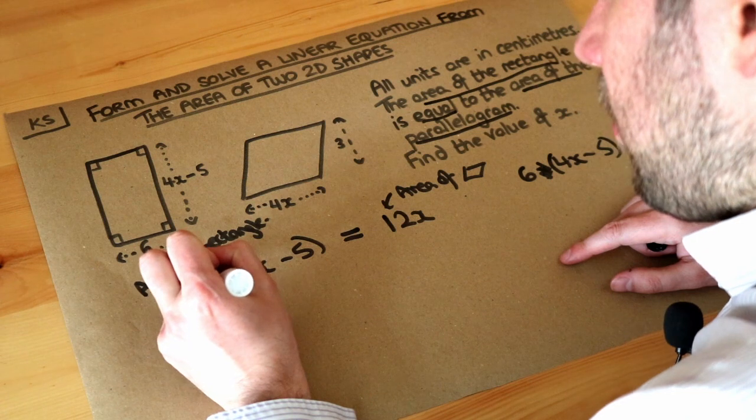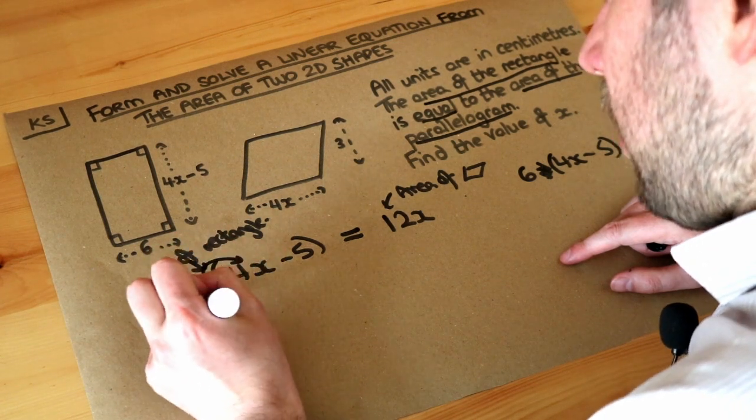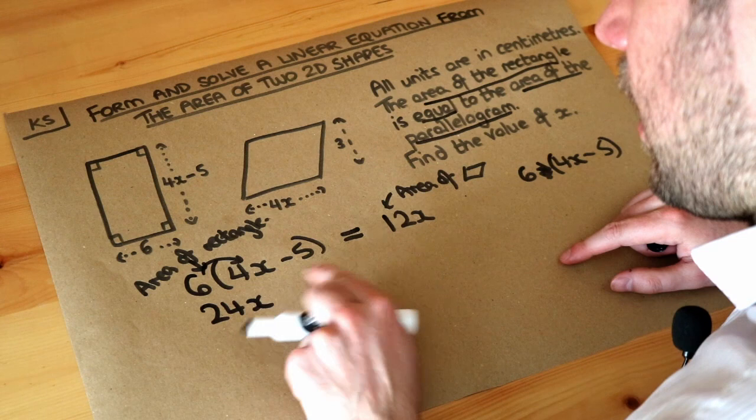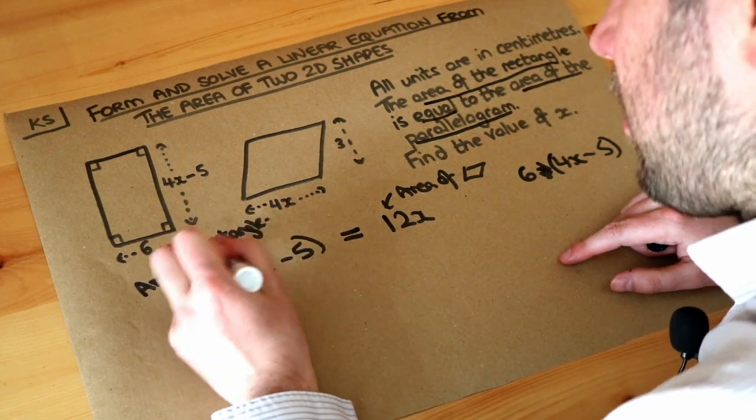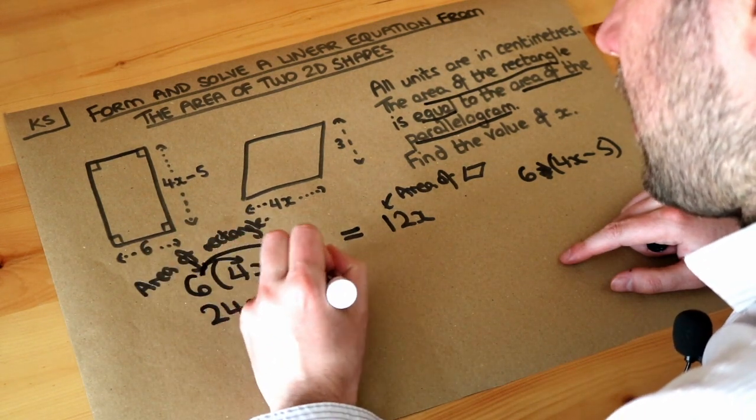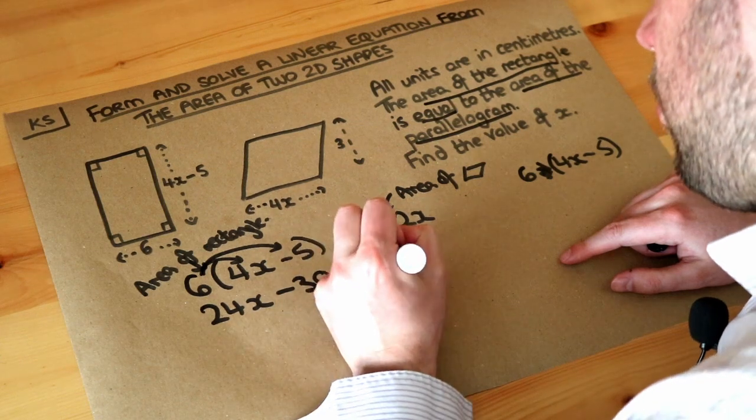So we can do 6 times the 4x, which is 24x because 6 times 4 is 24 and you've also got that x. And we've got 6 times minus 5, which is minus 30. And that is equal to 12x.